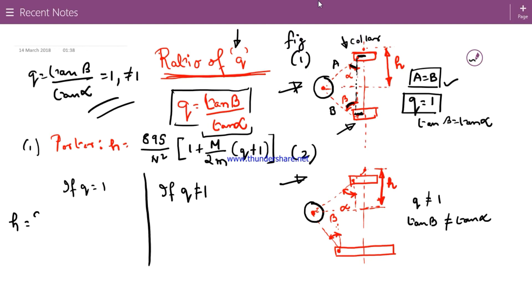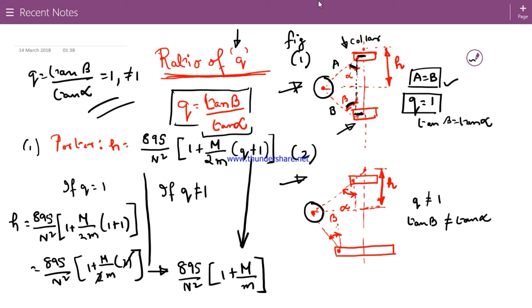So if it becomes 1, your formula will be like that. In case of Porter, it will be 1 plus capital M by 2M. In place of Q, I have put 1. So it will become 895 by N squared, 1 plus M by 2M into 2. So 2 gone. It will be 895 by N squared, 1 plus capital M by small m. So your actual formula, Porter height formula, Governor-Porter height formula will reduce from this to this.